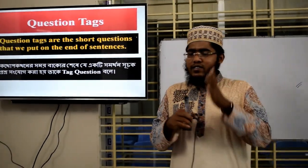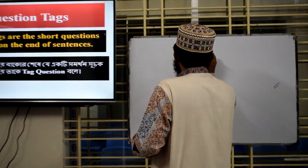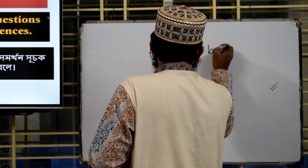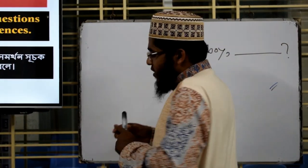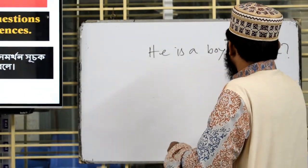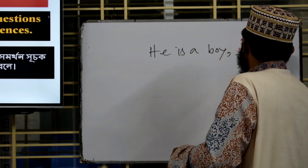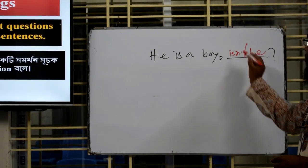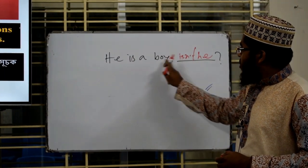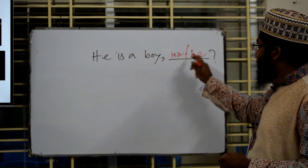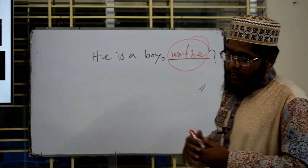For example, suppose we are writing 'He is a boy.' At the end of this sentence, we add a short question like 'isn't he?' So 'isn't he' is the question tag. We add short questions at the end of our sentence — that is the question tag.